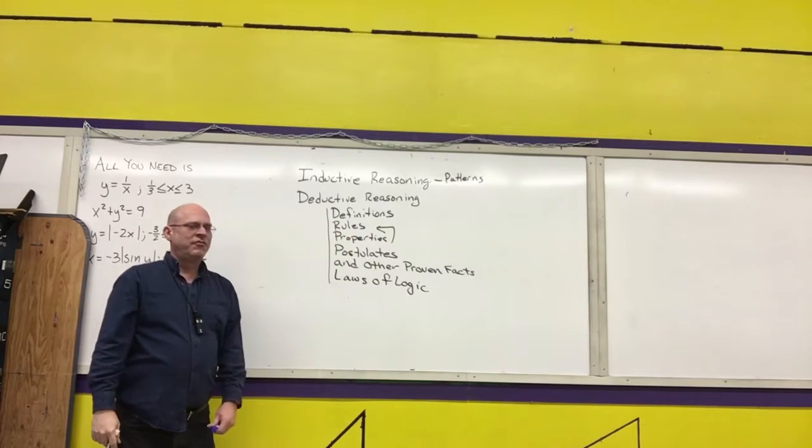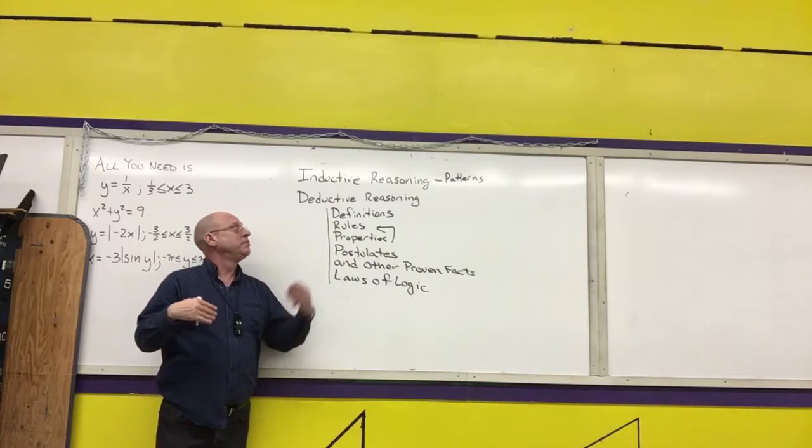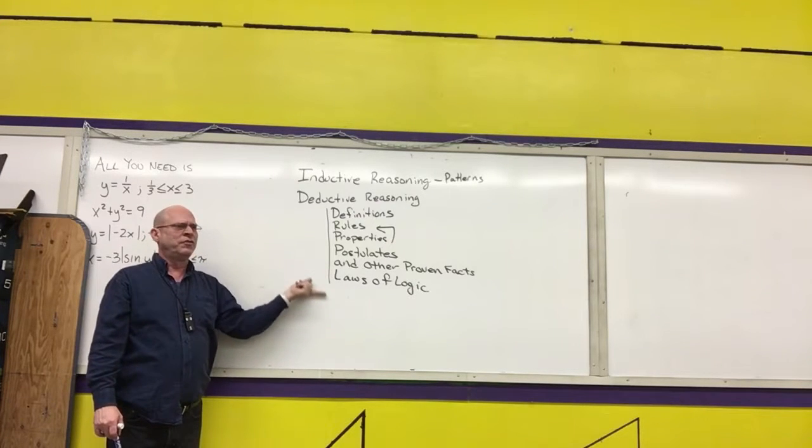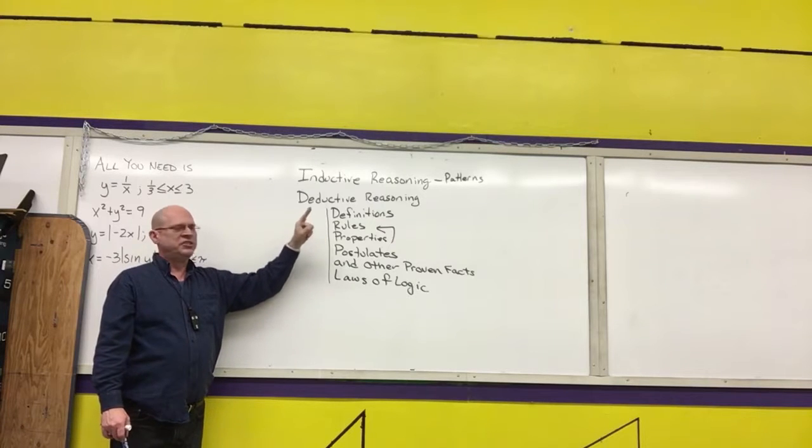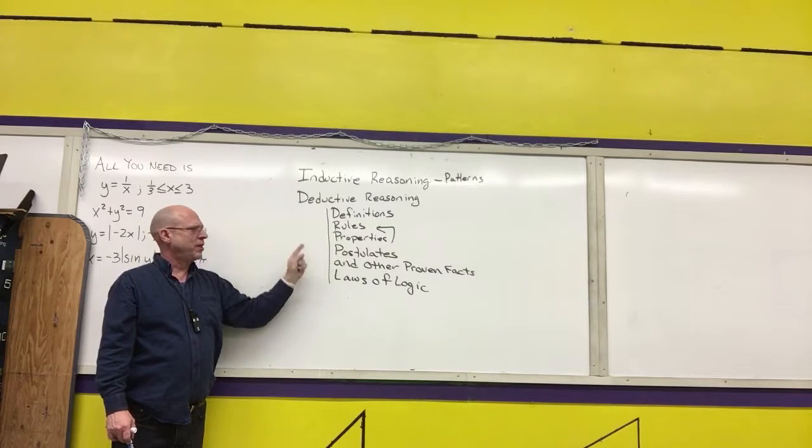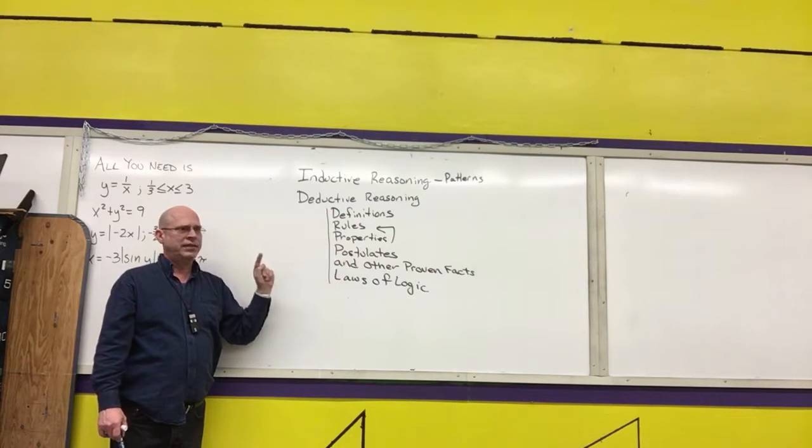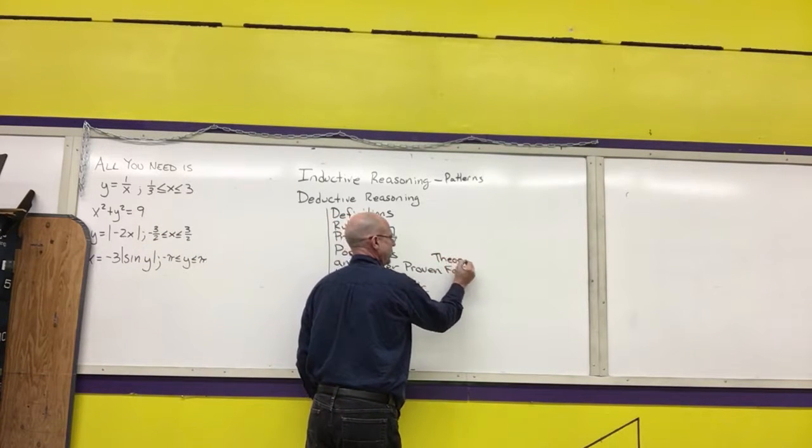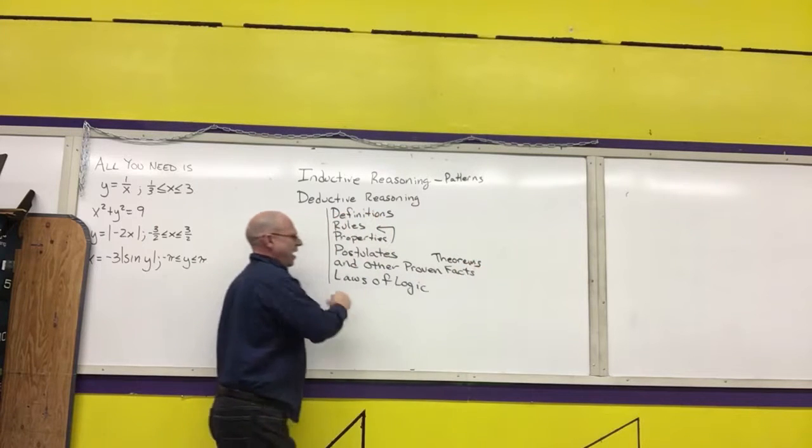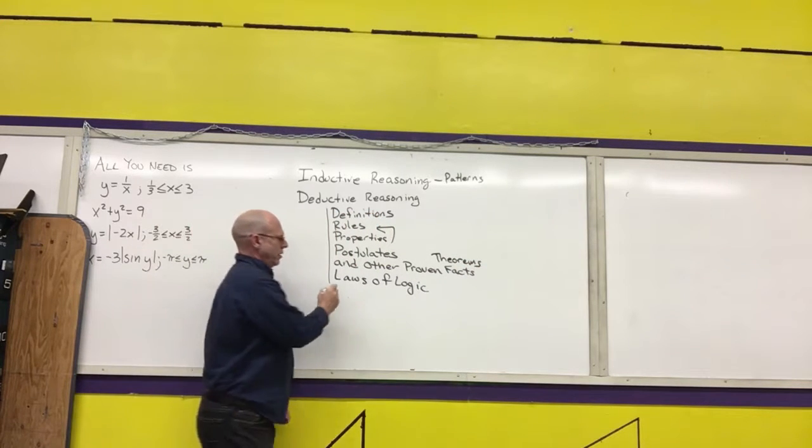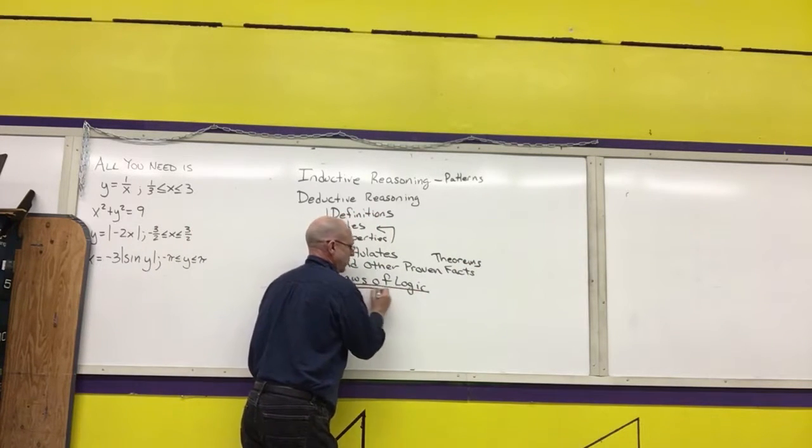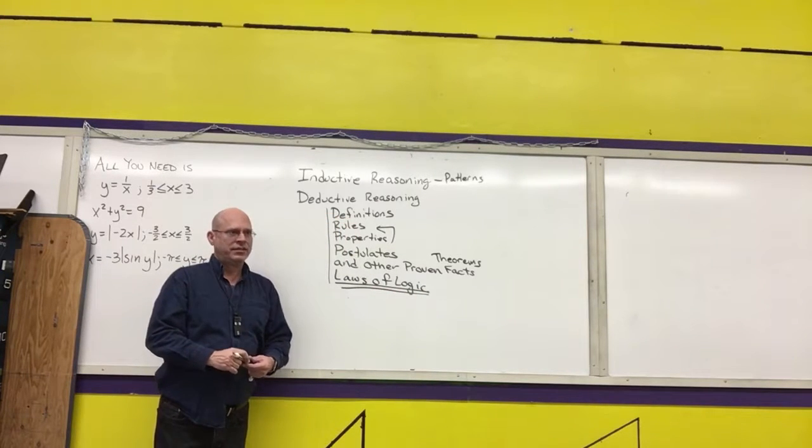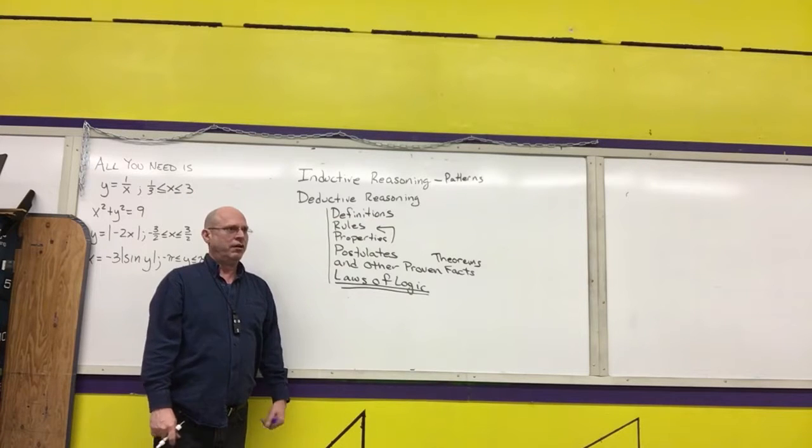So unless I'm asking for an inductive reasoning type thing, these are the only things that you can use to explain why something's true or false. You have to justify it with definitions, rules, properties, postulates, and other proven facts, which in this class are called theorems. And laws of logic. This is what we are going to cover today, are the two basic laws of logic that we're going to use. There are several of them.